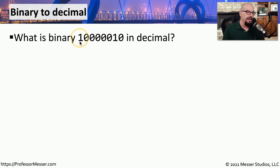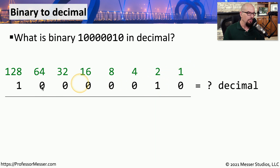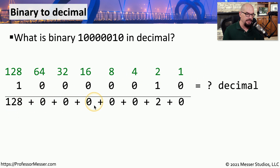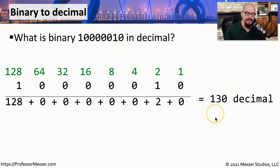Let's do another one. Let's calculate 10000010 in binary and convert that to decimal. Same process — we put down all of the bits and place our conversion chart right on top. Every place there is a 1, we bring down the number from our conversion chart; every place there's a 0, we bring down a 0. The calculation is 128 plus 0 plus 0 plus 0 plus 0 plus 0 plus 2 plus 0, meaning that binary 10000010 is 130 in decimal.